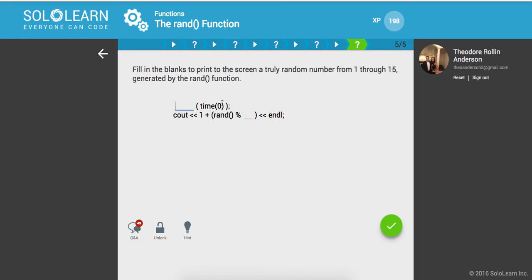So fill in the blanks to print to the screen a truly random number from 1 through 15 generated by the RAND function. So sRAND and 1 to 15. Awesome.